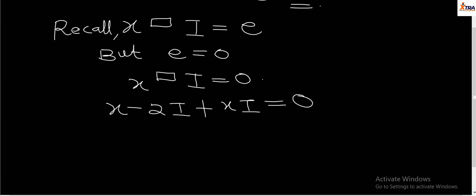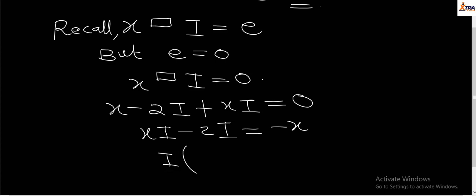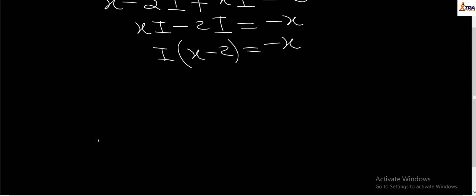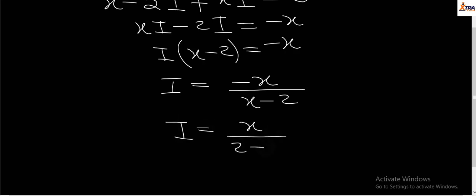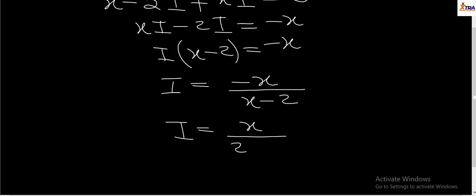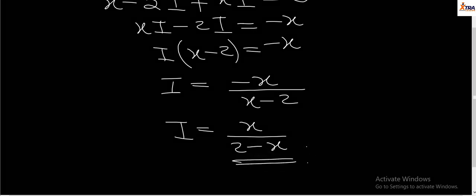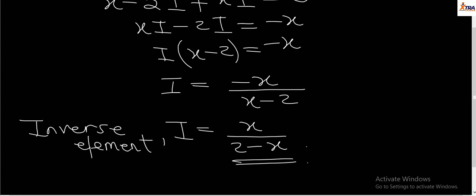Factorizing I, we get I times (X minus 2) equals minus X, so I equals minus X over (X minus 2). Multiplying both numerator and denominator by minus one, this can also be written as I equals X over (2 minus X). This is the inverse element of the given operation.